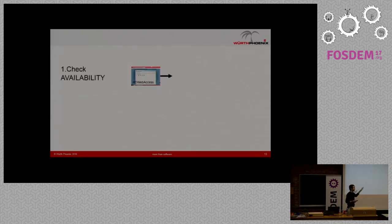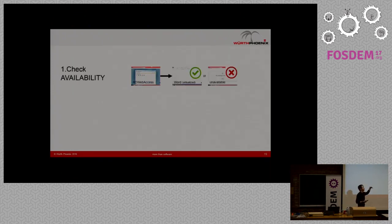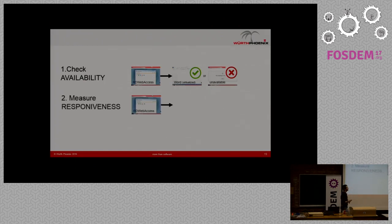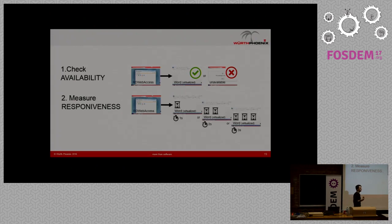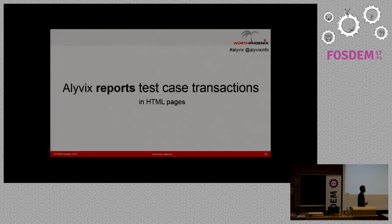This goes on for all test case transactions, one after another. The final achievement is assessing two things: availability — is the transaction available or not — and responsiveness — how many seconds it takes to appear.